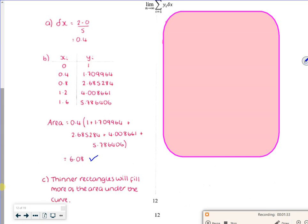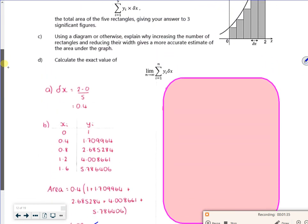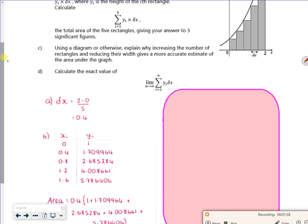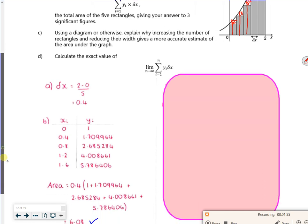So if you go back up to this picture, if you imagine halving the rectangles there, can you see how it's kind of like reducing that error? Same with that one there, it's reduced that error. Same with that one there, it's reduced that error in the area. So that's kind of what it's asking you to say.